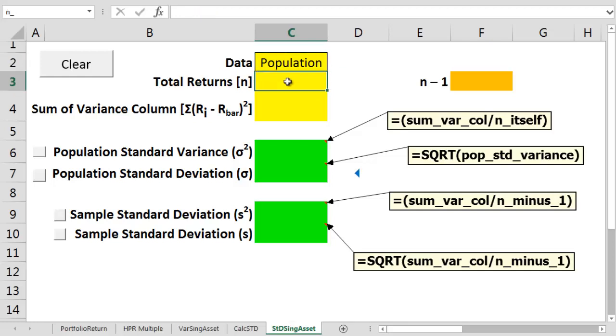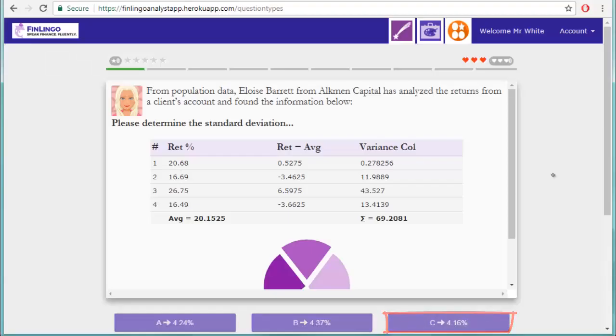So, it's population. The total number of returns is n, or 4, and the sum of the variance column is 69.2081. Divide this sum by 4, and this gets us a population variance of 17.30. We then square root this variance to get a population standard deviation of 4.16. And amazingly, it's correct.